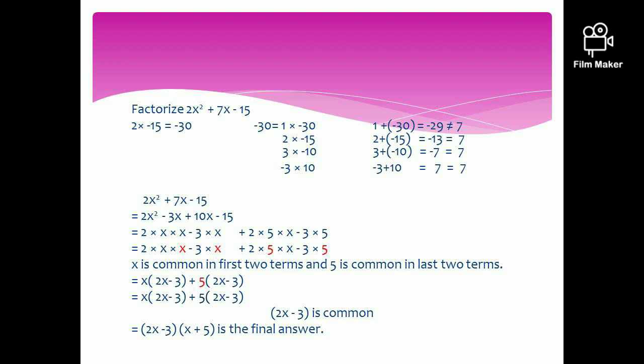This is our last example. Factorize 2x squared plus 7x minus 15. Multiply 2 by minus 15 — the coefficient of the quadratic term by the constant term — giving minus 30. Factors of minus 30: 1 times minus 30 gives minus 29, not 7. 2 times minus 15 gives minus 13, not 7. 3 times minus 10 gives minus 7 — close, but we need plus 7. So write it as minus 3 times 10: minus 3 plus 10 equals plus 7. Therefore, split 2x squared plus 7x minus 15 as 2x squared minus 3x plus 10x minus 15.